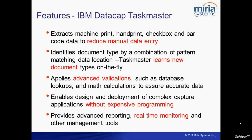Key features of IBM DataCap Taskmaster include: it extracts machine print, handprint, checkboxes, and barcodes automatically, which can almost eliminate data entry. It also automatically identifies document types using a combination of pattern logic and learns new documents on the fly, so an end user can define a document type, locate where the data is to be extracted on the form, and save it automatically — without needing an IT resource.